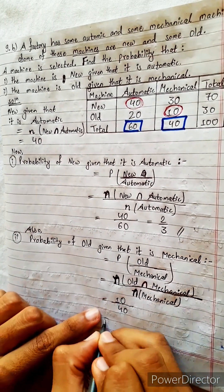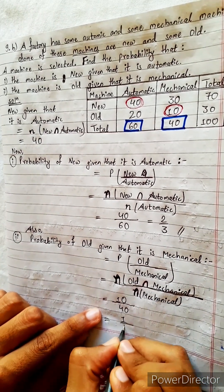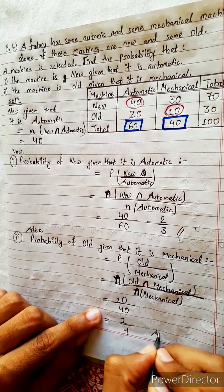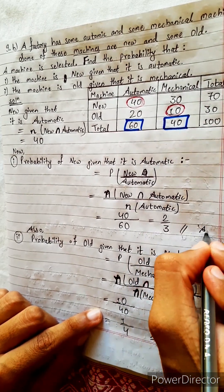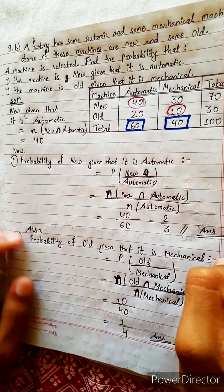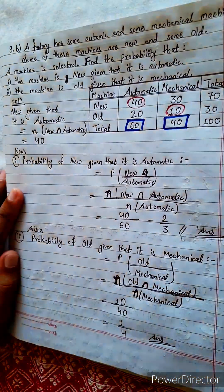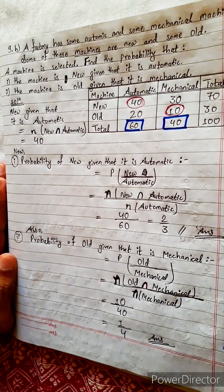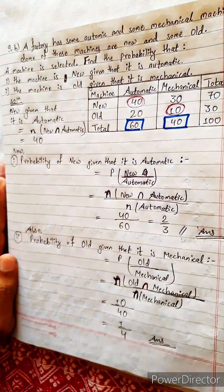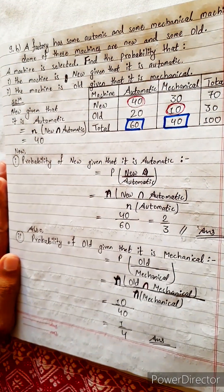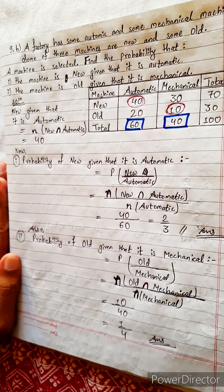And how much is this? It is 1 by 4. First answer 2/3, second answer 1/4. Both answers are correct. Now time to do the next question. Probability — next exercise. Be ready.